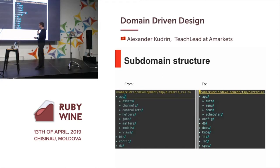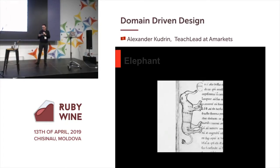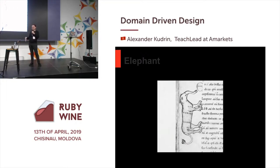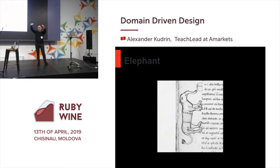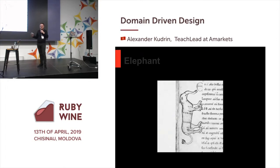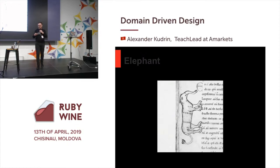Now let's talk about ubiquitous language. Some time ago I lived in St. Petersburg for a few years, and I visited a lot of museums around the city. In one of them I saw a picture of an elephant — this elephant didn't have any ears, didn't have a trunk, but it had scratches like a lion. In the Middle Ages, artists didn't have television, photography, or the internet, so they painted the elephant from a description. And if the description is not correct, your application will look like that elephant.